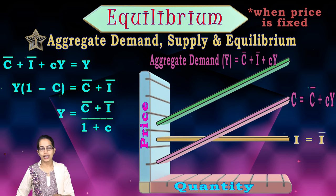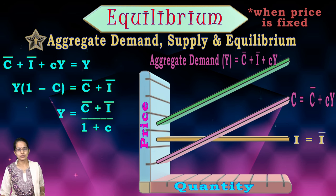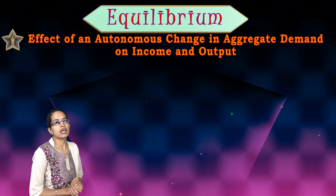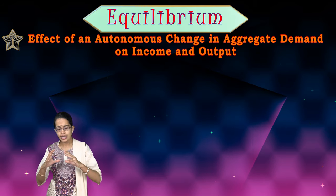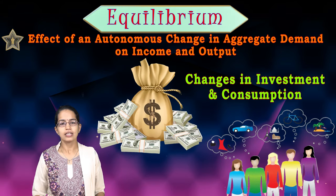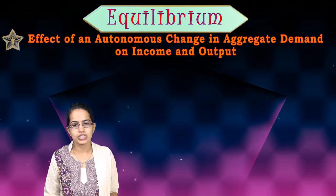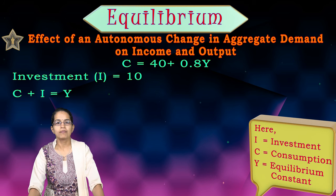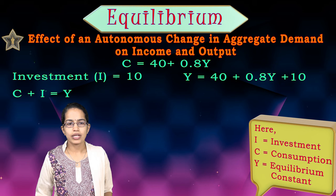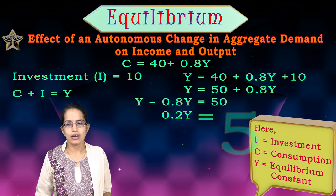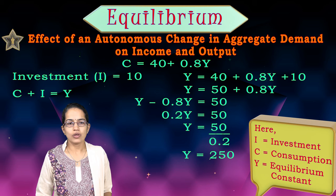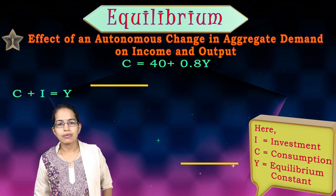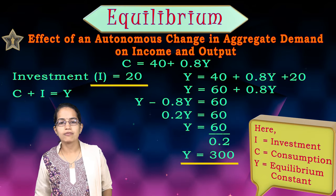When there are changes in income, investment, and consumption patterns, let us take an example: C = 40 + 0.8Y and investment = 10. Then C + I equals the total equilibrium value. Calculating Y: Y = 50 + 0.8Y, therefore Y = 250. When investment was 10, the equilibrium value was 250. However, when investment changes to 20, the new equilibrium changes to 300 — a drastic shift in the aggregate demand curve.